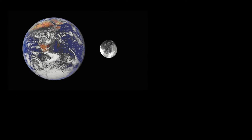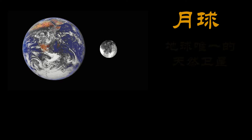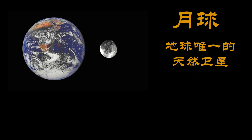Let's first take a look at some science. The Moon is an opaque planet — a planetary body. What is an opaque planet? It means the planetary body cannot let light pass through it.